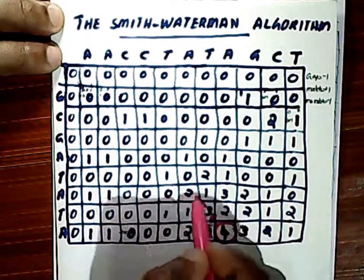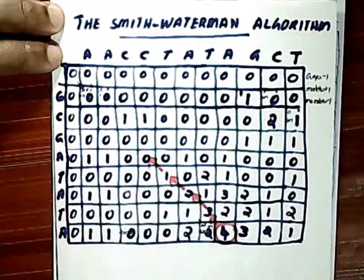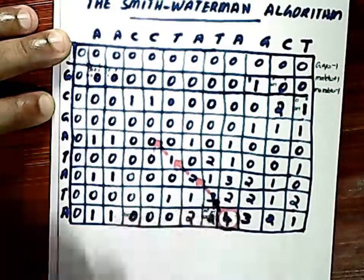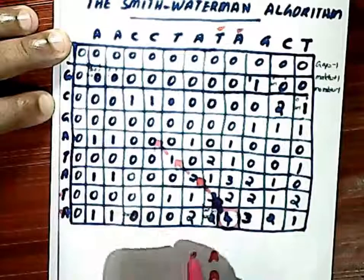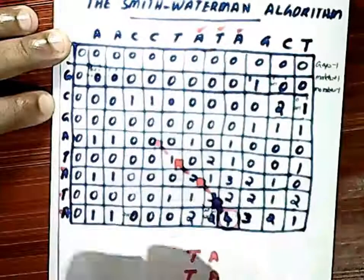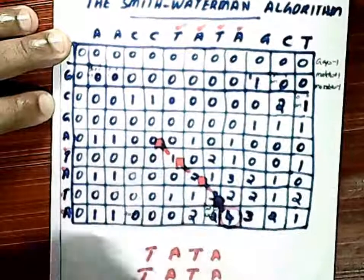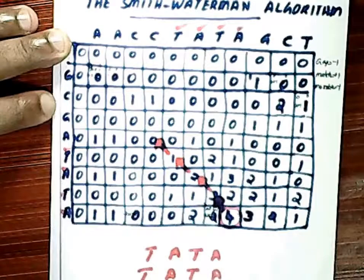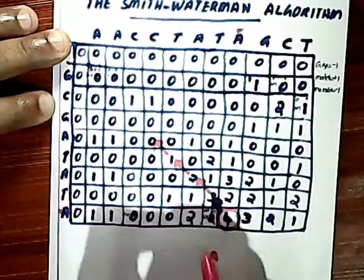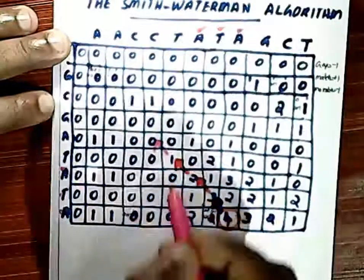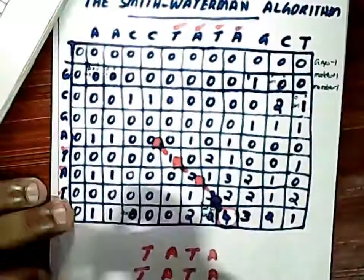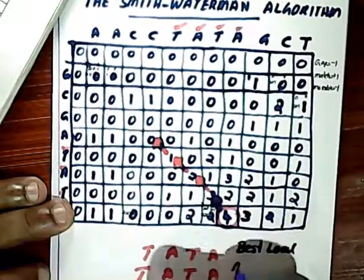The maximal value in the partial alignment score table is four. Starting with this position and working backward until we reach a value of zero, we obtain the alignment. We choose the alignment sequence based on the diagonal arrows, as discussed in Needleman's algorithm. The best local alignment sequences are TATA and the best local alignment score is four.